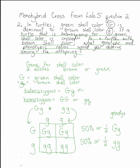Our phenotype is going to be what it actually looks like. Big G little g is going to be a green shell turtle. Little g little g is going to be a brown shell turtle. And that completes the problem.